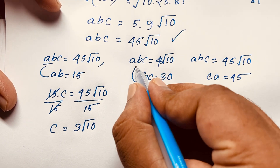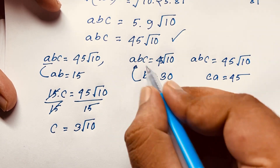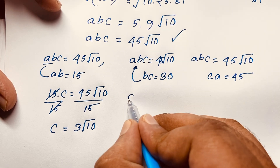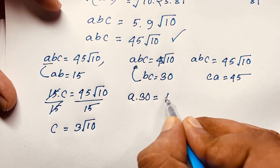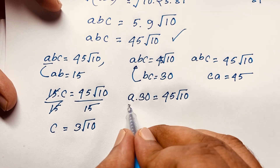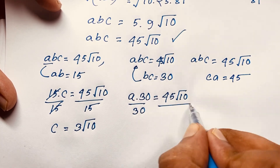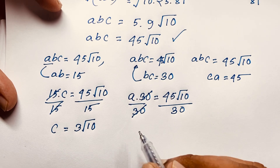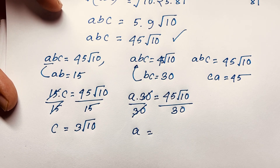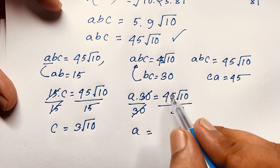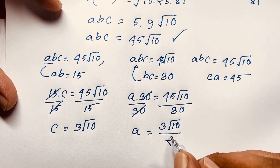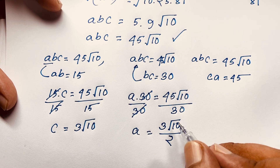To find a, substitute into abc = 45√10 using bc = 30: a × 30 = 45√10. Dividing both sides by 30 gives a = 45√10 / 30 = (3√10) / 2. So a = 3√10 / 2.